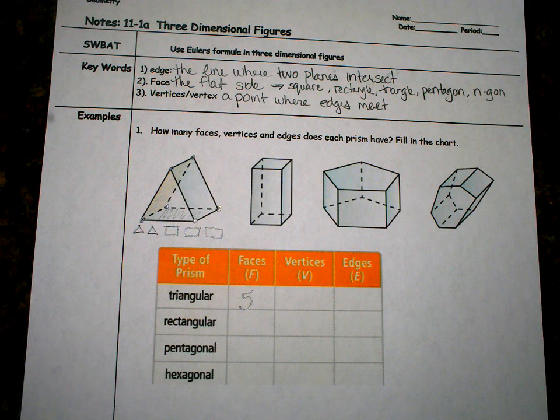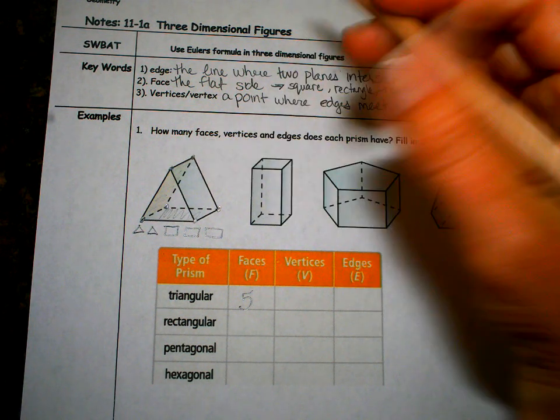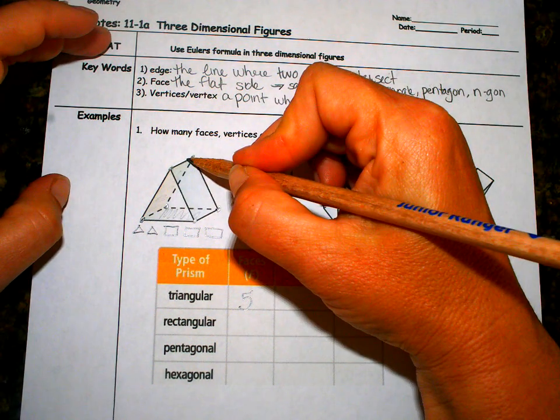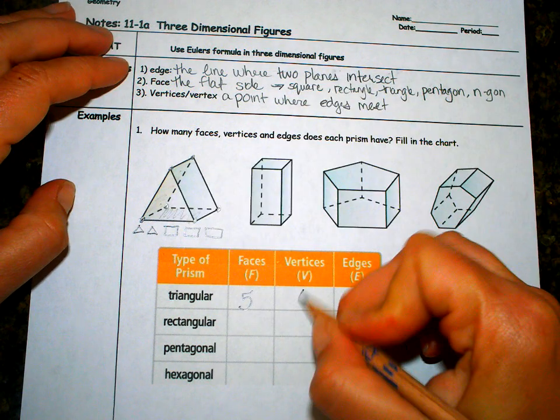A vertex is the corner. That's where I put the dots earlier. One, two, three, four, five, six. Six vertices.